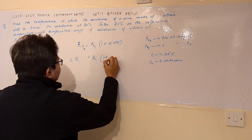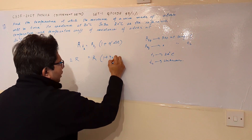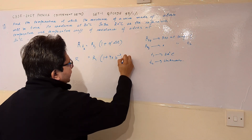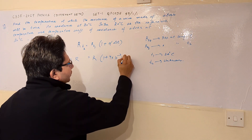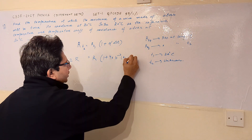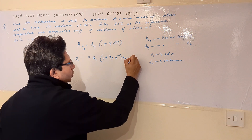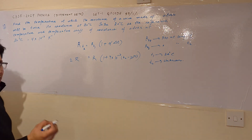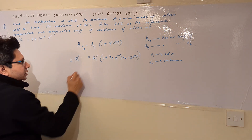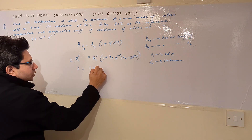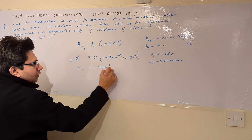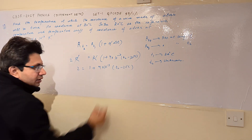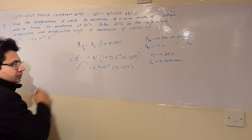Now putting in the respective values: alpha is 4 into 10 to the power minus 3, and delta T is T2 minus T1, where T1 is 20 degrees Celsius. After substituting and simplifying, R cancels and we get: 2 equals 1 plus 4 into 10 to the power minus 3 times (T2 minus 20 degrees Celsius).